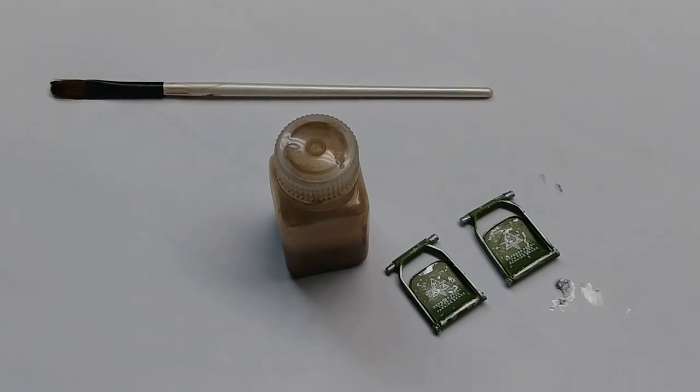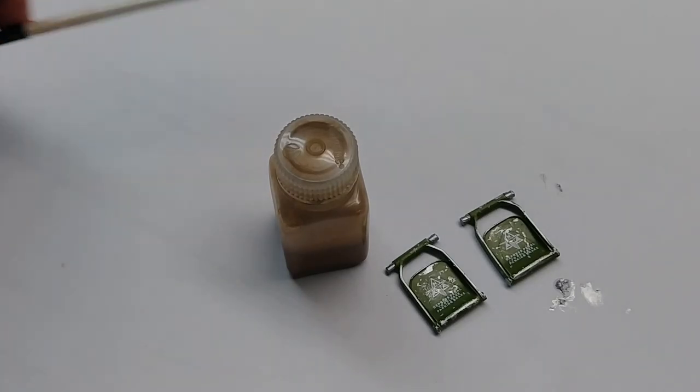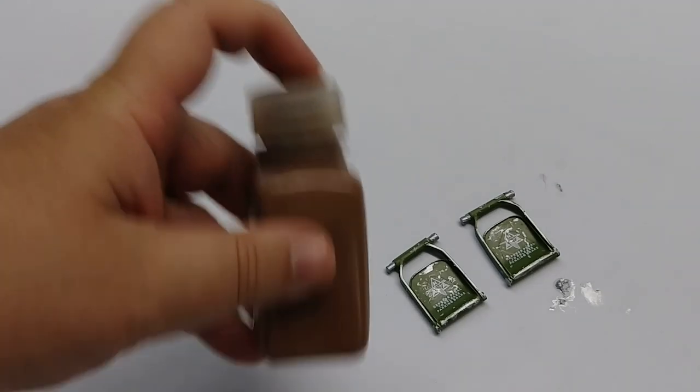That's how you use the Rub and Buff. Next on the list is we want to make them look dirty and used. Now one thing I notice a lot when people are doing this is they tend to overdo it. If you can see the dirt for more than about two or three feet away you've overdone it. What you're trying to achieve here is an overall effect of just a mild color change that's not consistent.